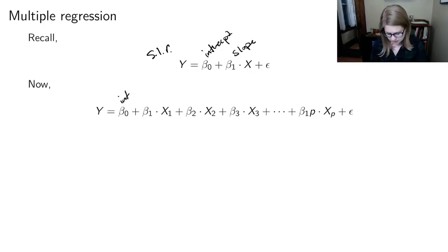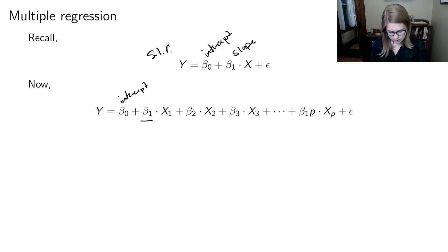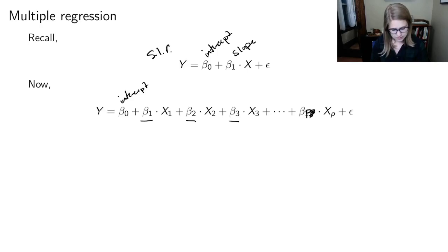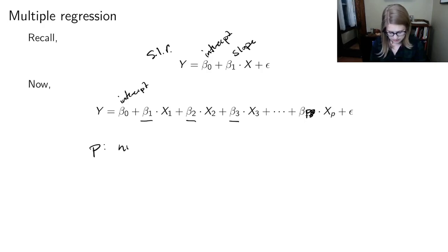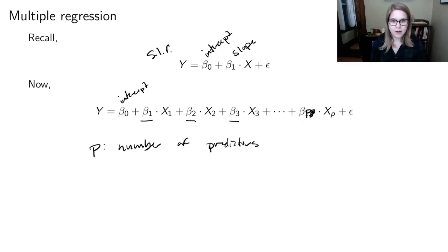So we're still going to have an intercept, but now we're going to have a bunch of different betas — beta one, beta two, beta three, up to beta p. You can have as many as you'd like, as many predictors as you want. p is the number of predictors, and then I could have that number of x's as inputs.